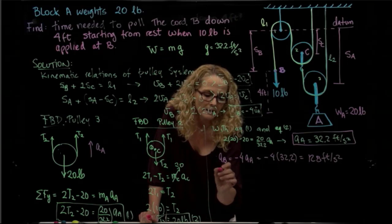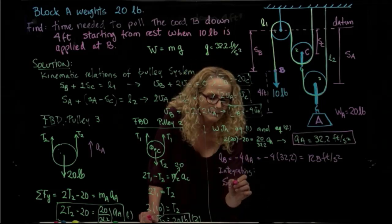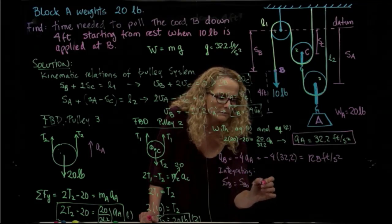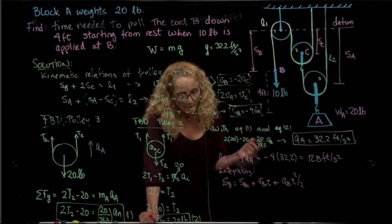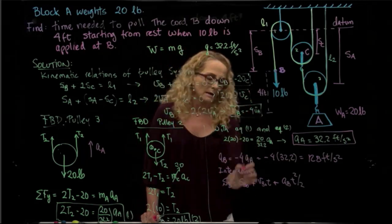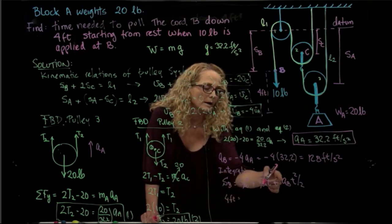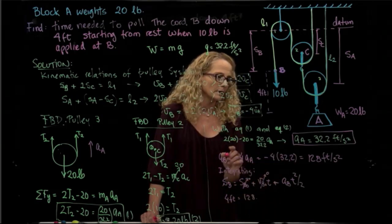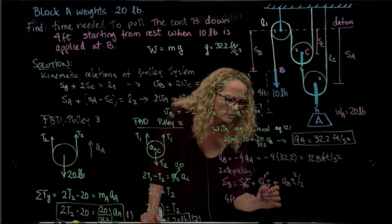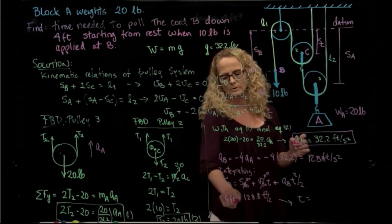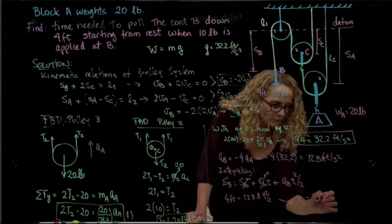Finally, since acceleration of B is constant, we can integrate. The kinematic equation gives us: distance of B equals the initial distance plus initial velocity of B times t plus acceleration of B times t squared over 2. The system starts from rest, so initial velocity is zero. With 4 feet of distance and acceleration of 128.8 feet per second squared, solving for t gives us 0.249 seconds — and that's the answer we were looking for.